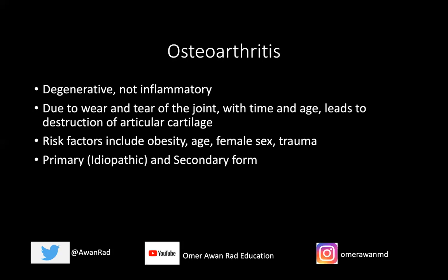The primary form is idiopathic — no known cause. But the secondary form: if you have an underlying abnormality, like a genu varum or a genu valgum deformity, you can develop osteoarthritis.